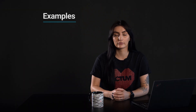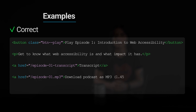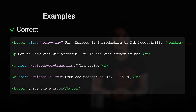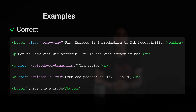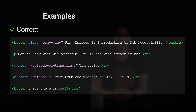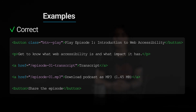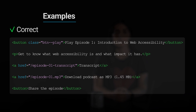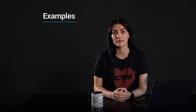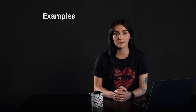The following example shows the correct usage or implementation of accessibility. Podcast with transcript: there is a website containing a podcast audio file, a button with text 'Play Episode 1: Introduction to Web Accessibility', and a short description of the episode saying 'Get to know what web accessibility is and what impact it has.' Below, there is a link with the text 'Transcript' that will redirect users to a separate page containing the transcript. Also, there is a link with the text 'Download podcast as MP3' and a button with text 'Share the episode.' Users are instructed about what the podcast is and what it is about. They can listen to it online or download it to their devices and they have access to the transcript so they can read it, listen to it or perceive it through other means such as a braille display.